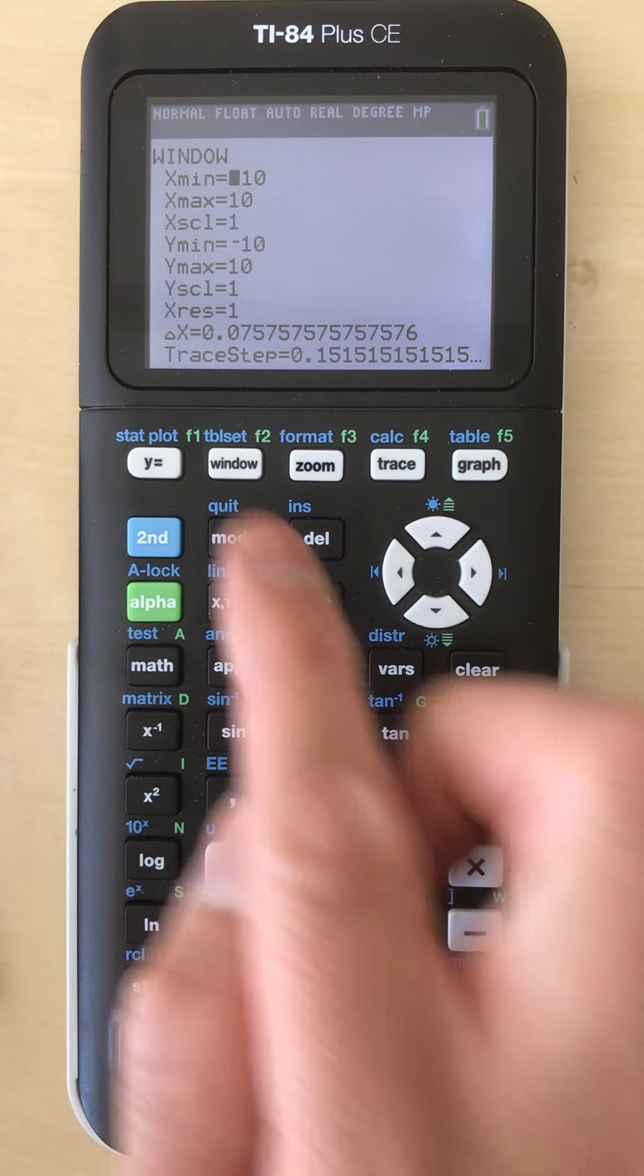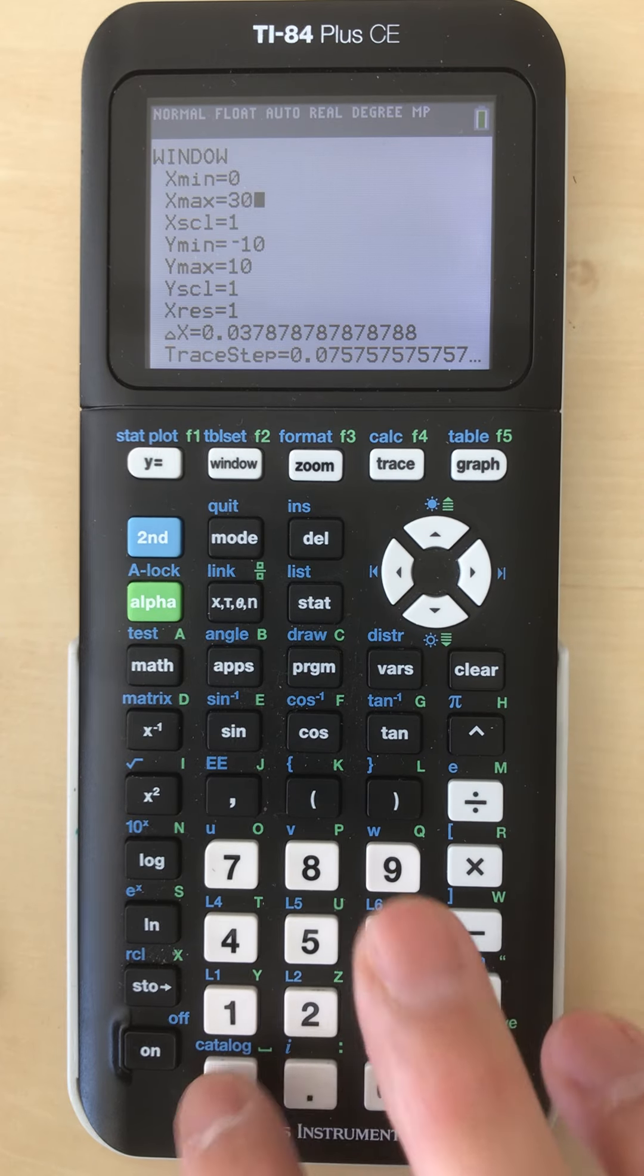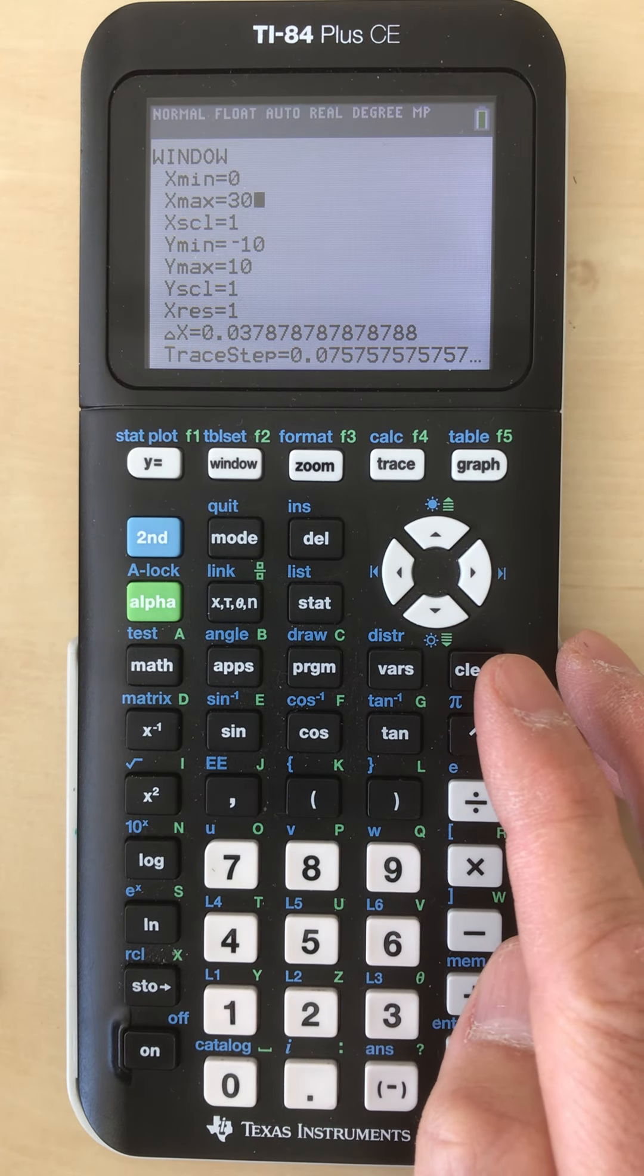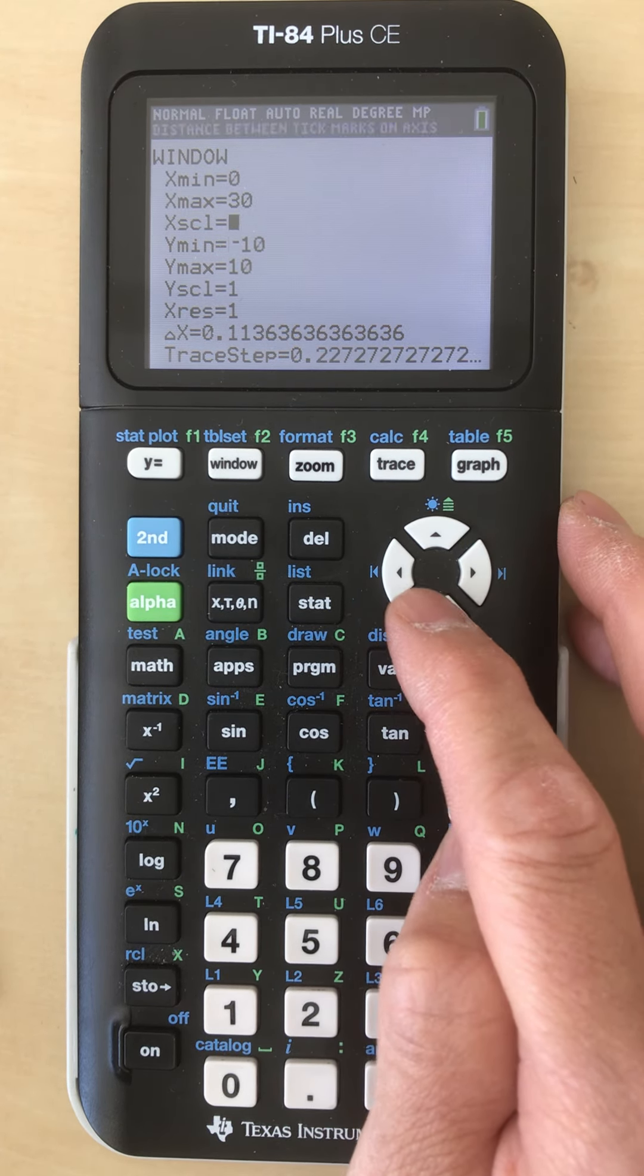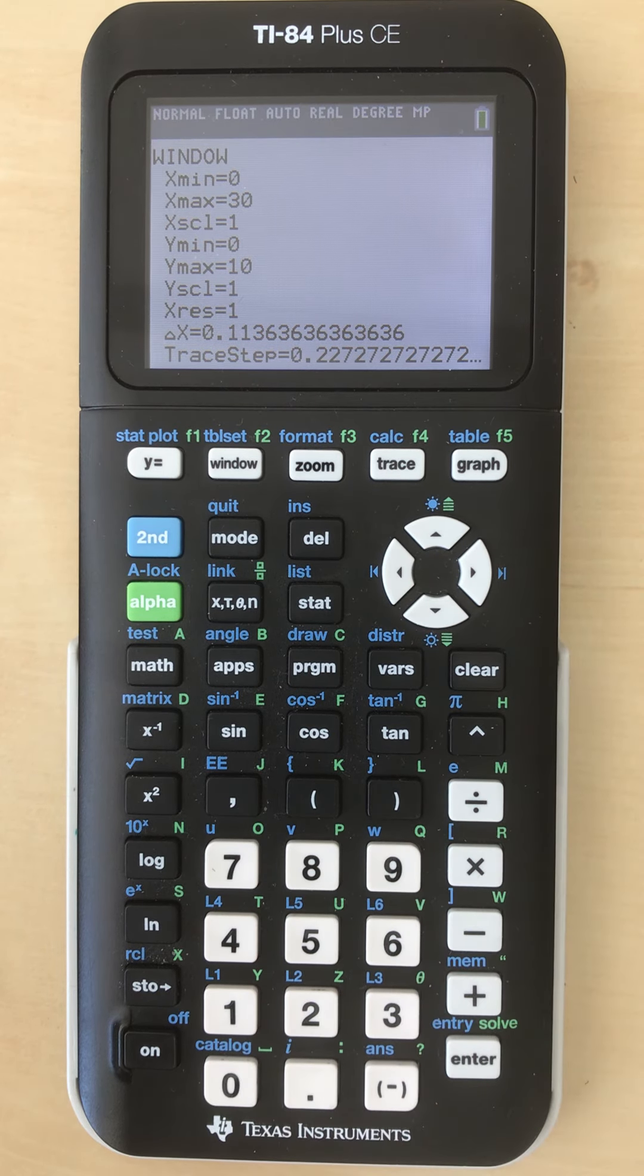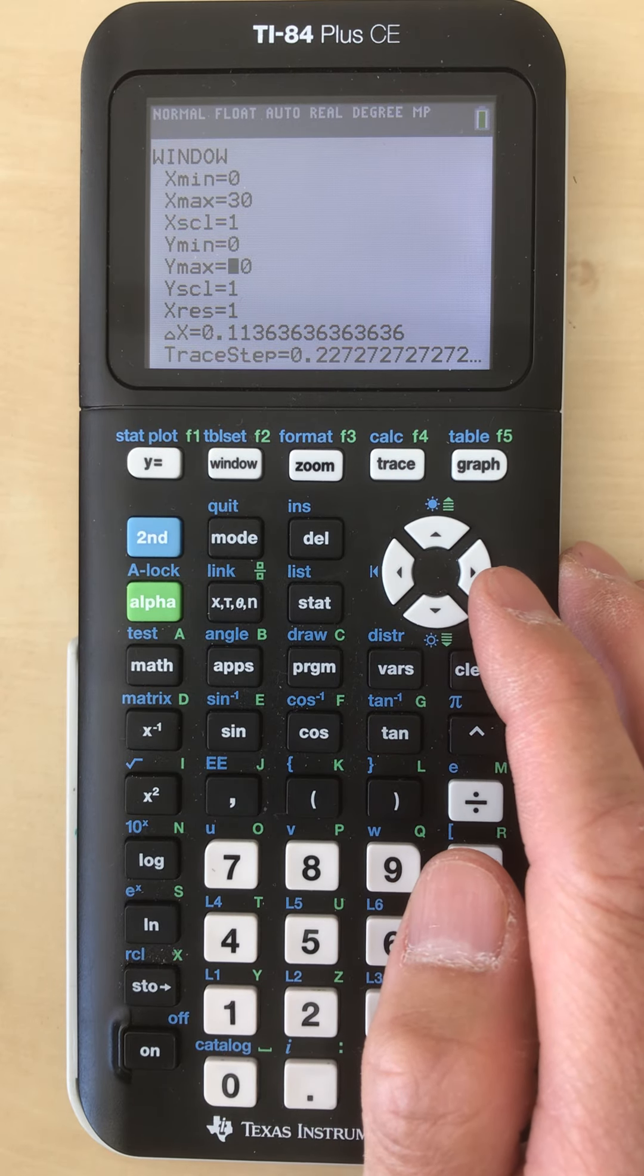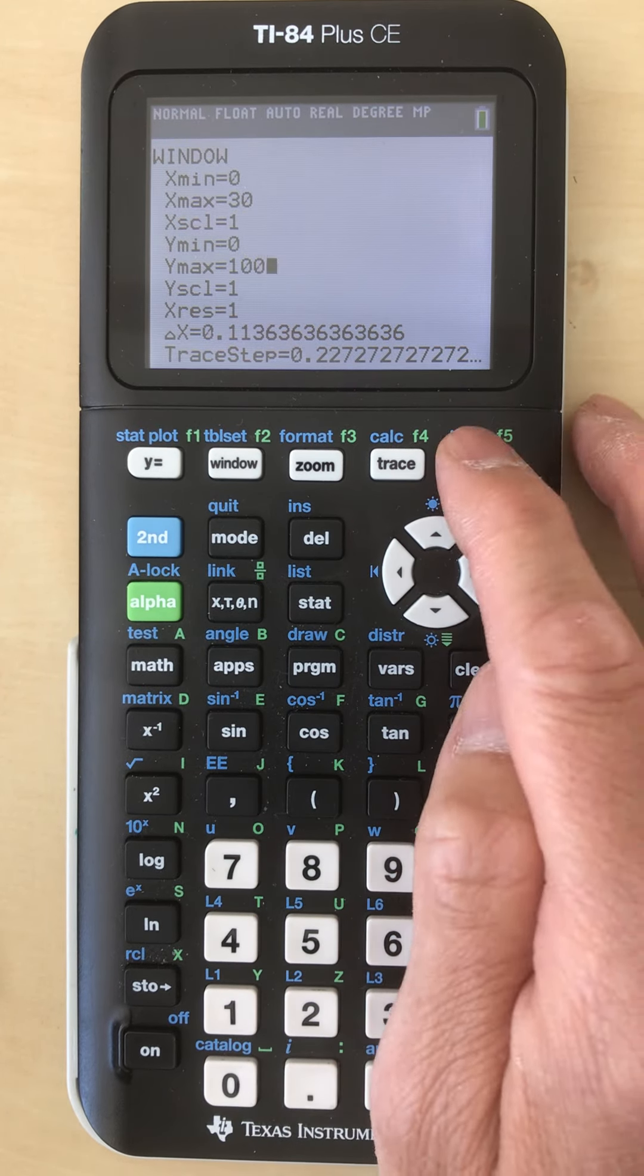The x minimum value is zero, the x maximum value is 30 - that's where the projectile or the firework lands. The y minimum, we can't go underground, so we're going to say zero, that's the ground. And then the y maximum, it tells you it's 100 meters, so I'm going to put 100.